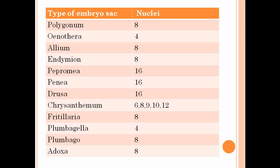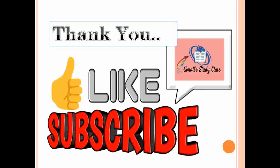This is about the types of embryo sacs observed in angiosperms: monosporic, bisporic, and tetrasporic. Thank you. If you like this video, please like, share, and subscribe to my channel.